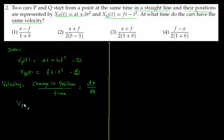We can say v_p, that is velocity of p as a function of time, is given as - now we can differentiate - if we differentiate this we get a + 2bt. This is equation number 3.